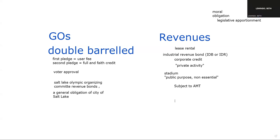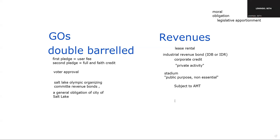I remember learning that if the test question mentions a city is backing it, then it's double-barreled. If it's a state that's backing it, then it's a moral obligation. I think that's basically accurate, though states do issue GO bonds. On a state, there are propositions where we're voting for the issuance of a GO bond — that's what I don't like about that shortcut. A moral obligation bond would have the state making the moral obligation to pay. I can't imagine it would be a county or some other entity.